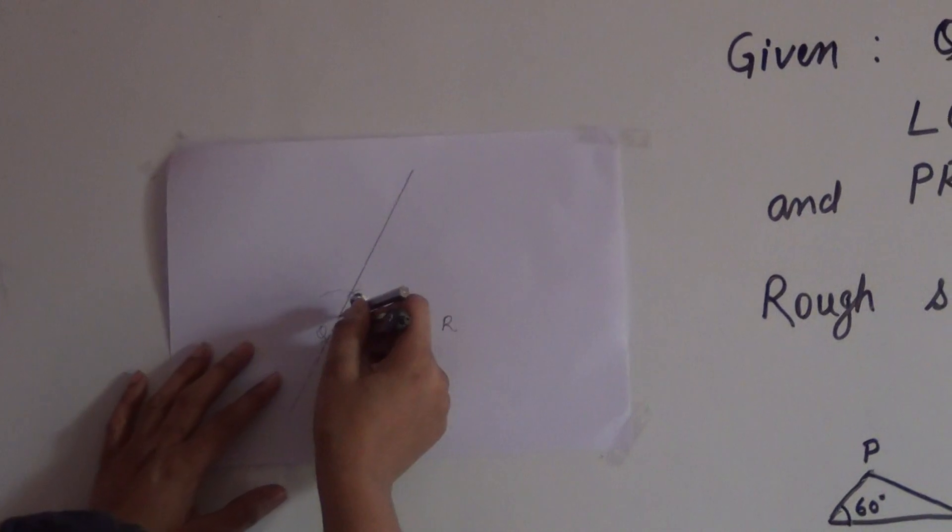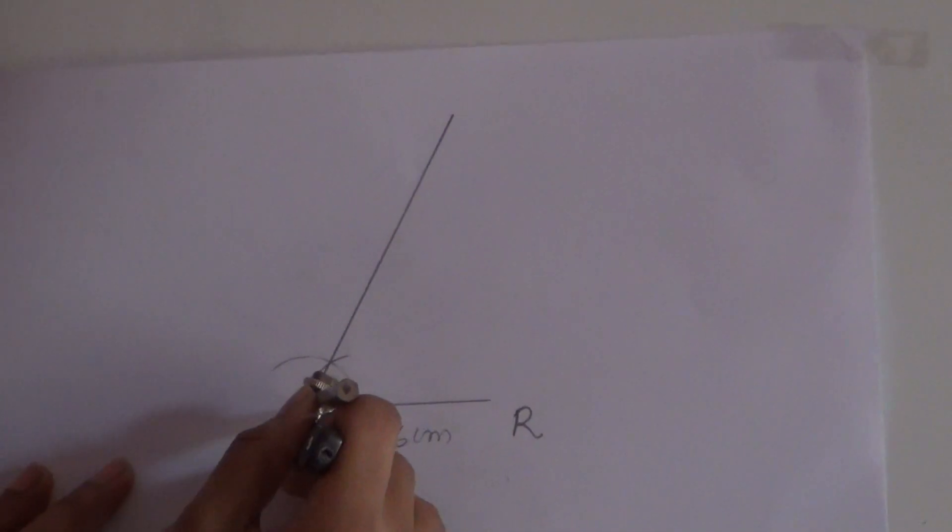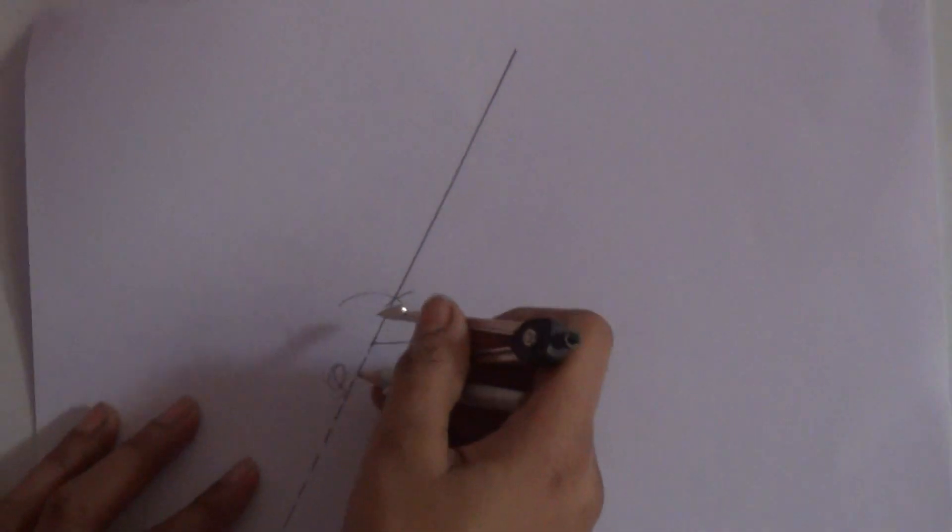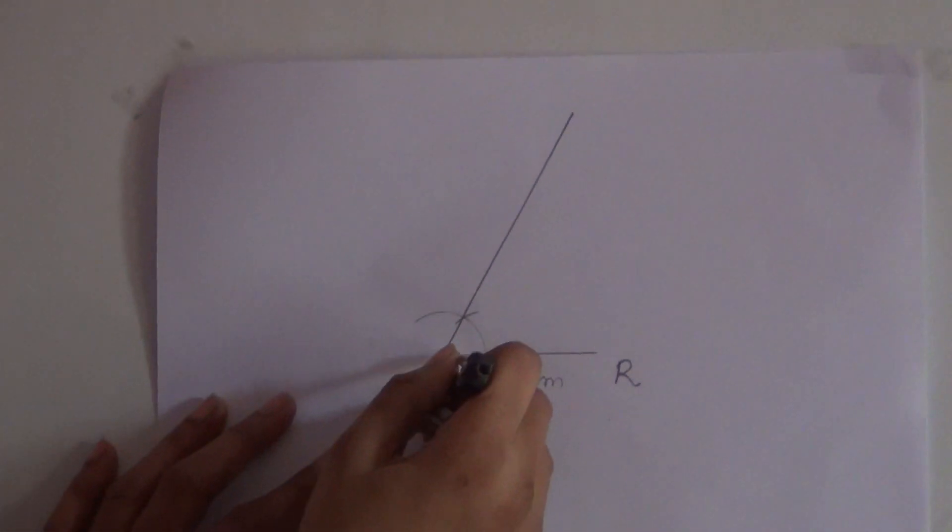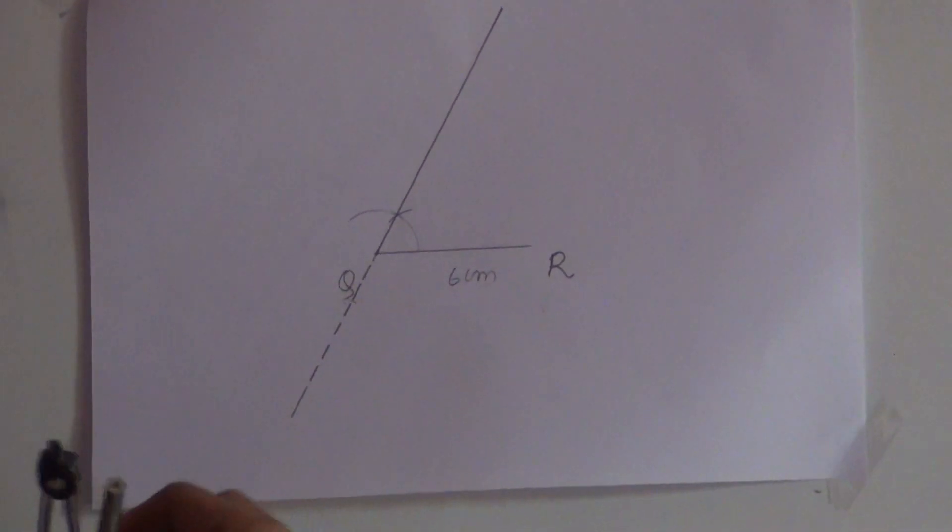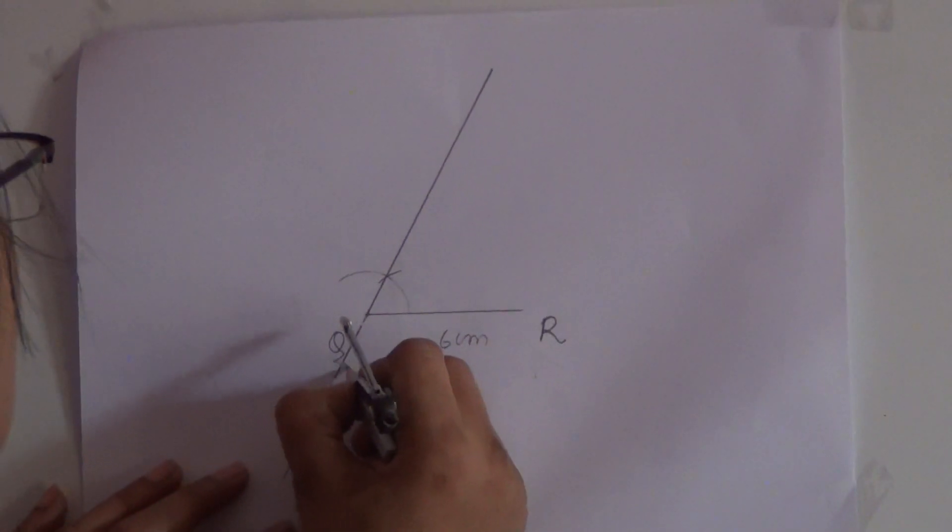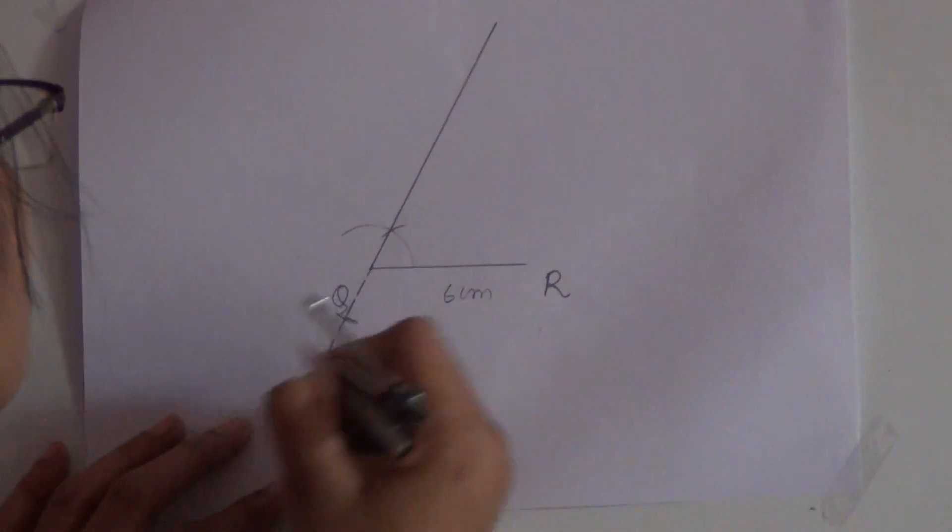From here, by keeping a compass, my compass here, I am just... yes, here it is. This arc, it is representing 2 centimeters.